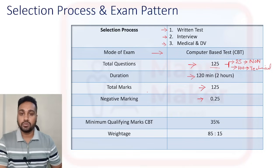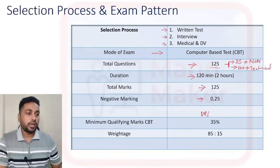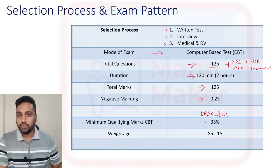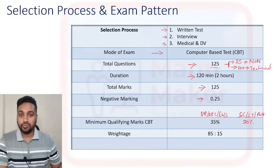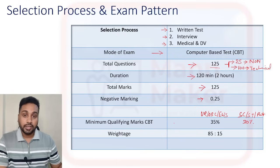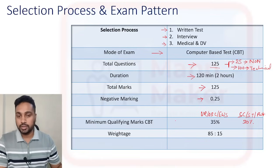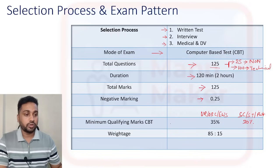There will be negative marking — for each wrong answer they are going to deduct 0.25 marks. For qualifying the CBT, for UR, OBC, and EWS category you should score 35% or more, and for SC, ST, and PwBD it should be 30% and above. Keep in mind that qualifying marks and cutoff marks are different — 35% means you qualify, but to be in the merit list you need to cross the cutoff marks.